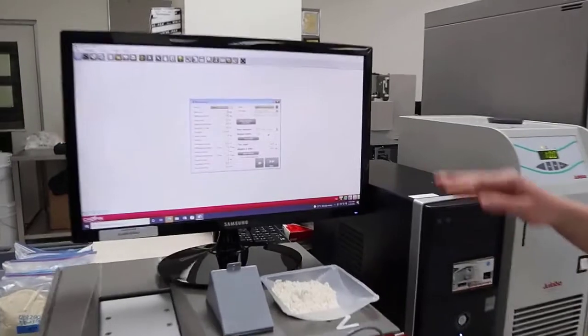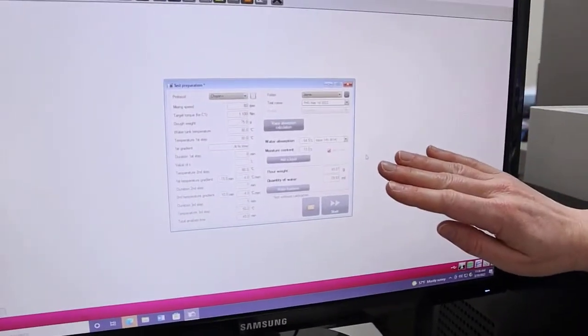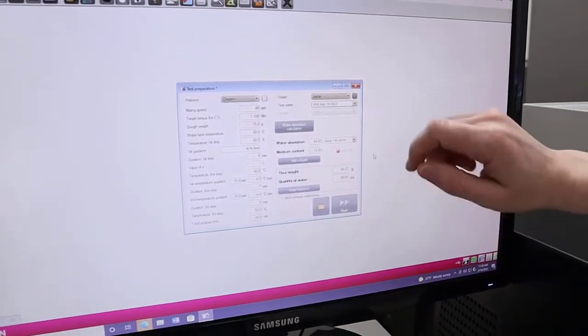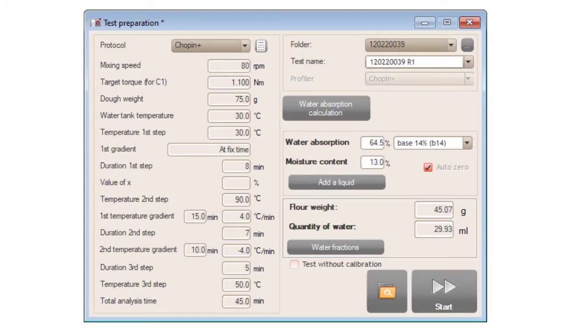So what I've done is I've input all the flour information into the dialog box here. Some of the key things, in addition to just naming your test, you can set the moisture basis for your flour. I've entered my moisture content and my target water absorption, and so the dialog box automatically calculates the amount of flour that I need to weigh out, which I've already done, and then this is the amount of water that the instrument will automatically add while I'm running the test.